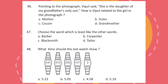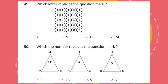Question 46. Pointing to the photograph, Vipul said, she is the daughter of my grandfather's only son. How is Vipul related to the girl in the photograph? Question 47. Choose the word which is least like the other words. Question 48. What time should the last watch show? Question 49. Which letter replaces the question mark? Question 50. Which number replaces the question mark?